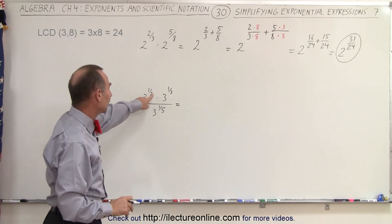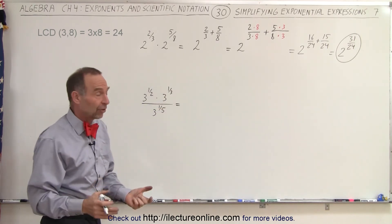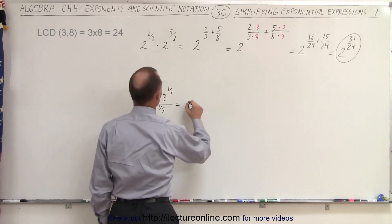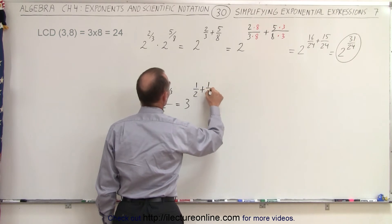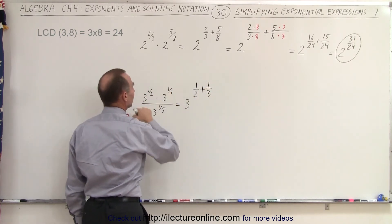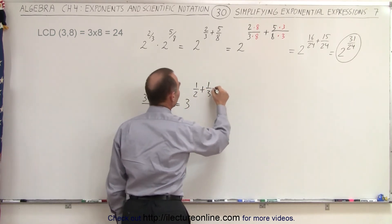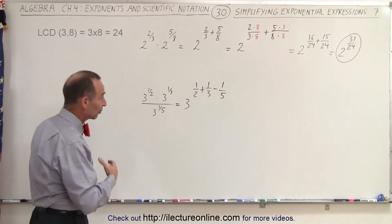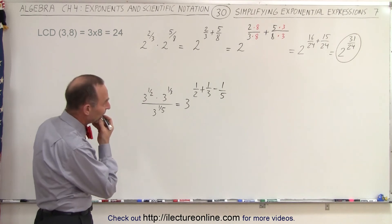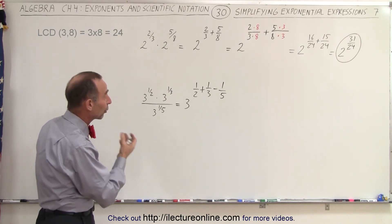Same over here. Notice that none of the denominators of the exponents are the same. So that means this is going to be written as 3 to the 1/2 plus 1/3. When we multiply, we add exponents, but when we divide, we subtract exponents. So this becomes minus 1/5. And now again, we need to find the lowest common denominator, which in this case, since they're all prime numbers, will be 30.